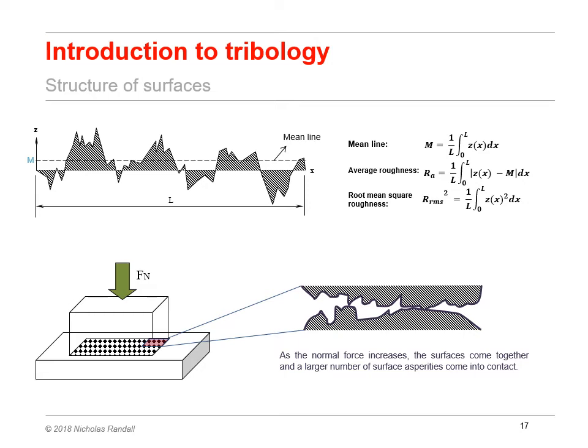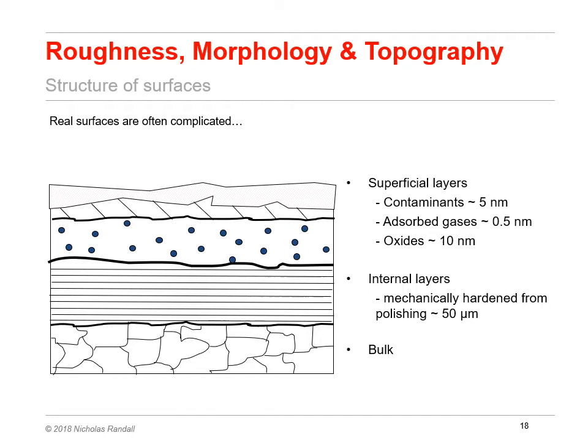We will also focus on how to understand a specific surface at the scale at which it will be used. We will consider previous processing steps such as fabrication and polishing, and environmental effects such as oxidation or contamination on the surface properties. You cannot understand tribology if you do not know your surfaces in sufficient detail, especially in terms of their mechanical, chemical, thermal and topographical properties.